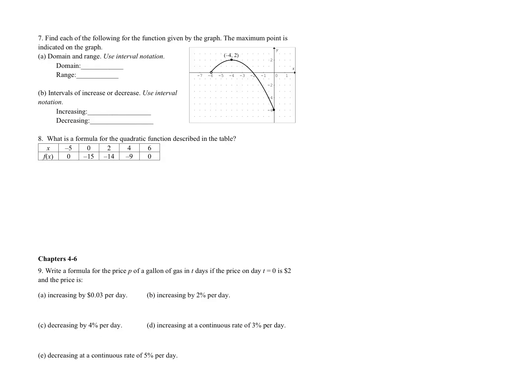Question seven gives us a graph, and they want us to find domain, range, and intervals of increase and decrease. For domain, we find every x value included in the curve. The leftmost x is negative 6, excluded, and the rightmost is 0, included. So we get an open parenthesis at negative 6 and a closed bracket at 0. For range, our lowest value is negative 6 and our highest is y equals 2, and we include both.